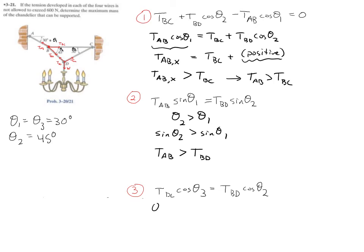Same idea down here. We've got theta 3 is less than theta 2, but cosine goes the other way. Cosine of theta 3 is bigger than the cosine of theta 2, and that means that the bigger cosine comes with a smaller tension. TDC is less than TBD.